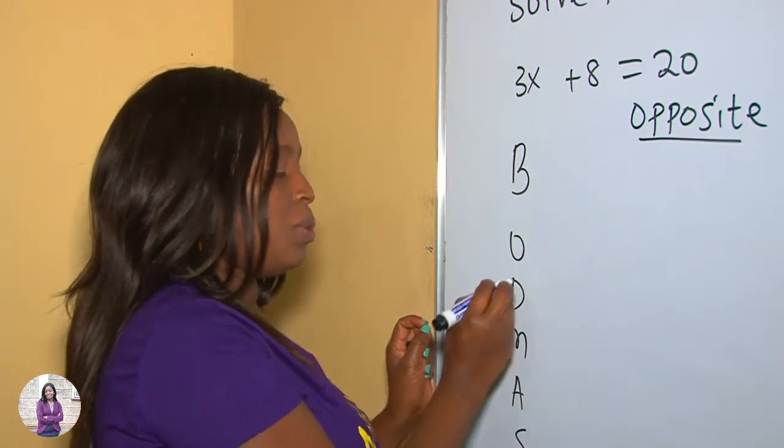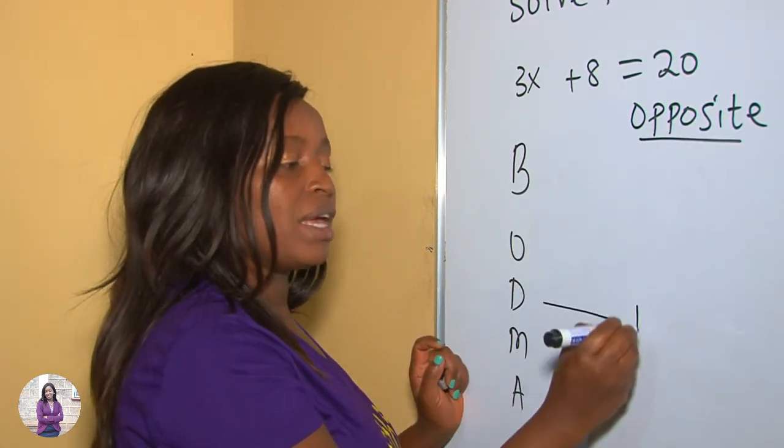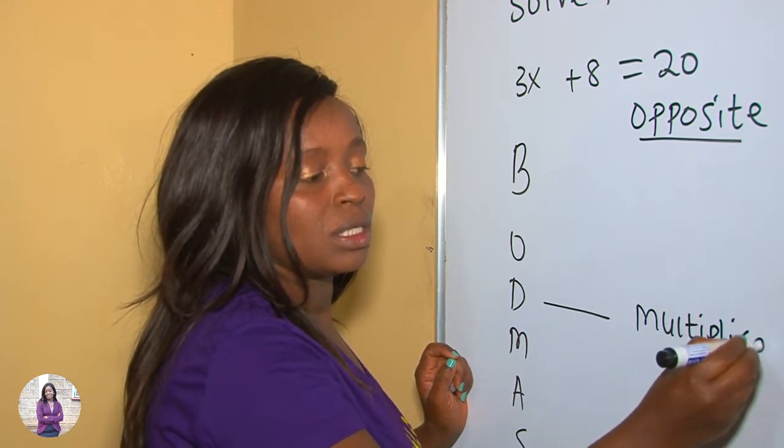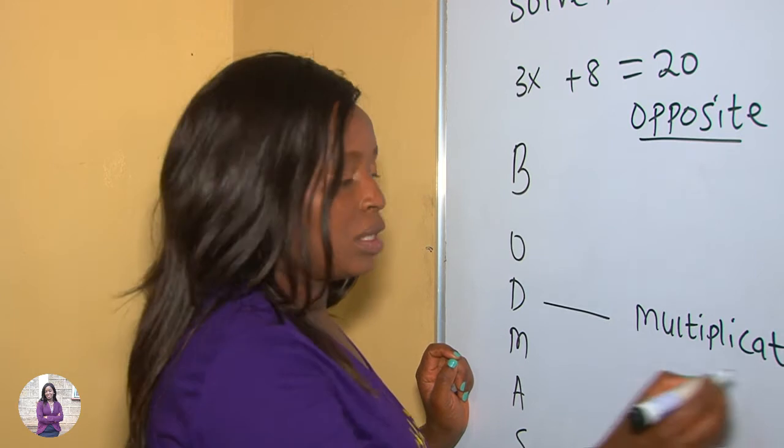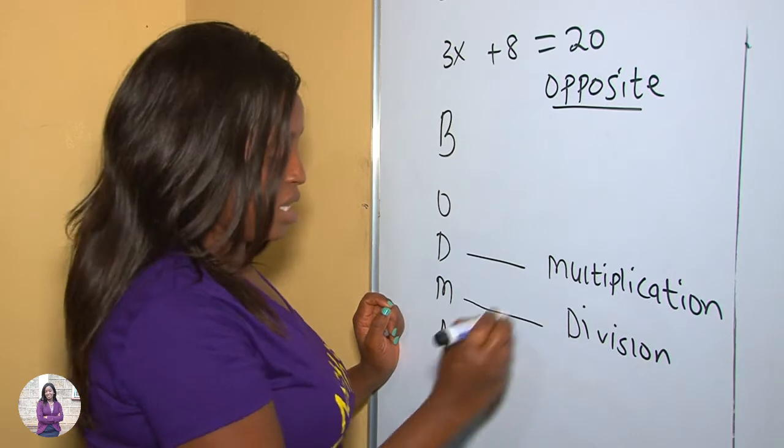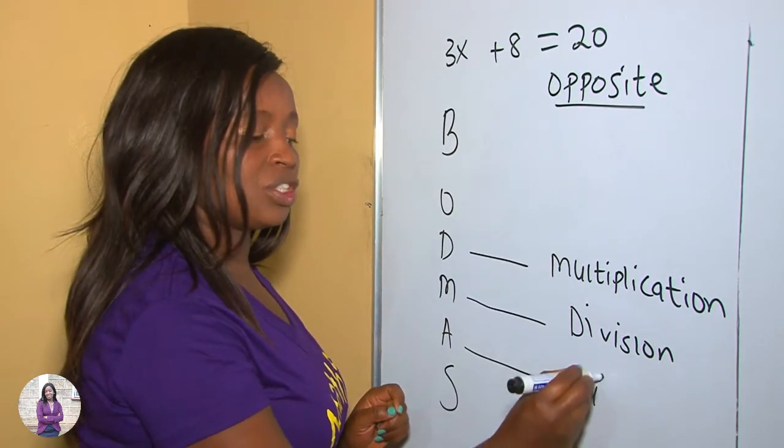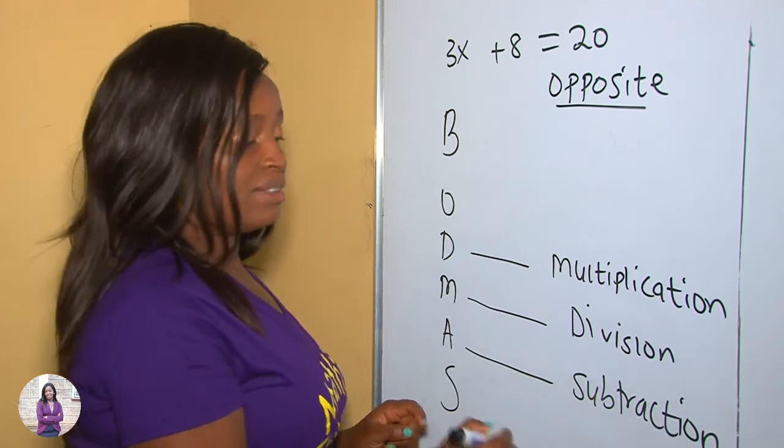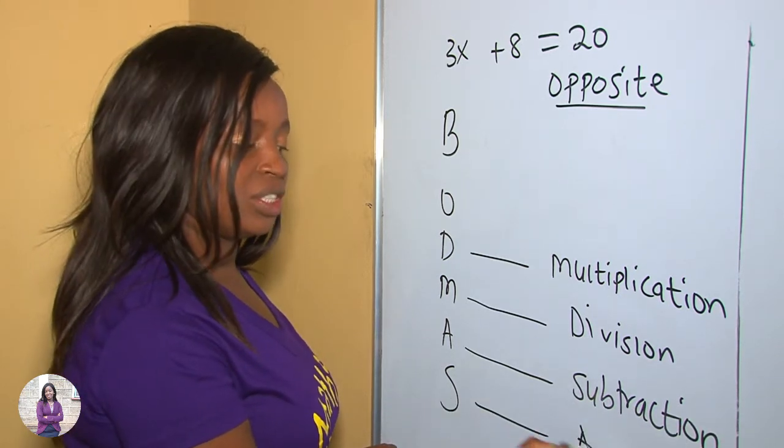When it comes to equations, we get the opposite. The opposite of division is multiplication, the opposite of multiplication is division, the opposite of addition is subtraction, and the opposite of subtraction is addition.